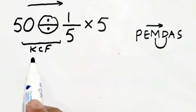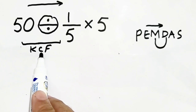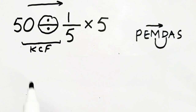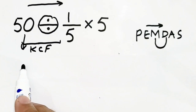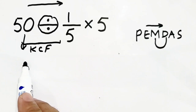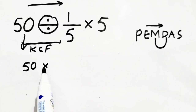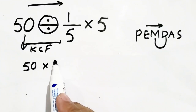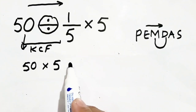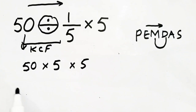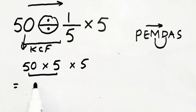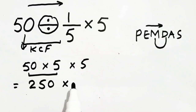What is the KCF rule? Keep, Change, and Flip. That means 50 is kept as itself, change division into multiplication, and flip it — so it becomes 50 multiplied by 5. When we multiply 50 with 5 we get 250, and then multiplied by 5 again.